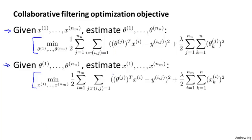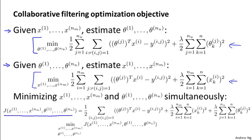What we're going to do is basically take both of these optimization objectives and put them into the same objective. So I'm going to define a new optimization objective J, which is a cost function — a function of my features x and a function of my parameters theta. That's basically the two optimization objectives put together.